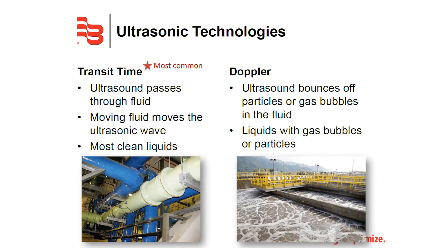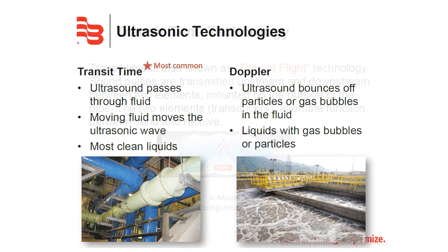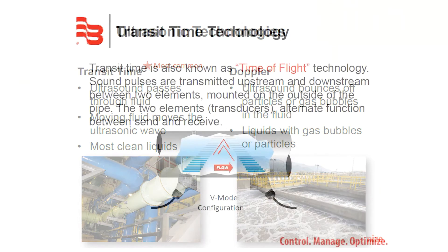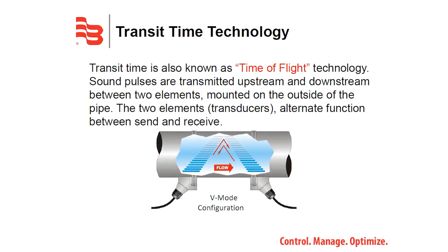There are two main types of ultrasonic flow meters: transit time ultrasonics, designed specifically for cleaner liquids, and Doppler ultrasonics, designed for liquids that contain suspended solids. Transit time technology is the most common ultrasonic technology, utilizing transducers for cleaner applications, also known as time of flight.